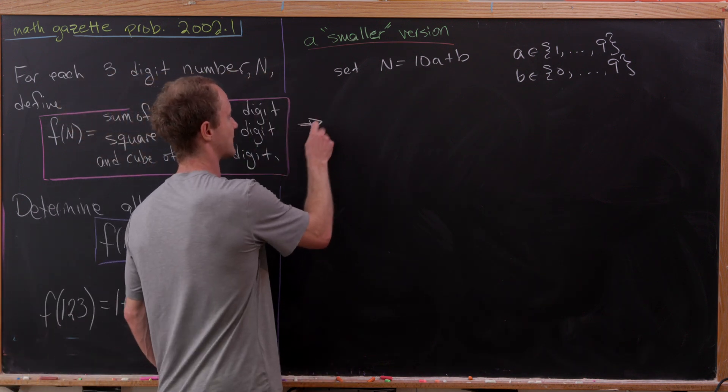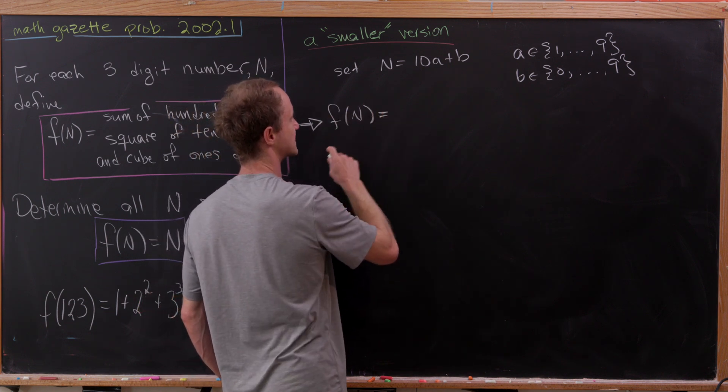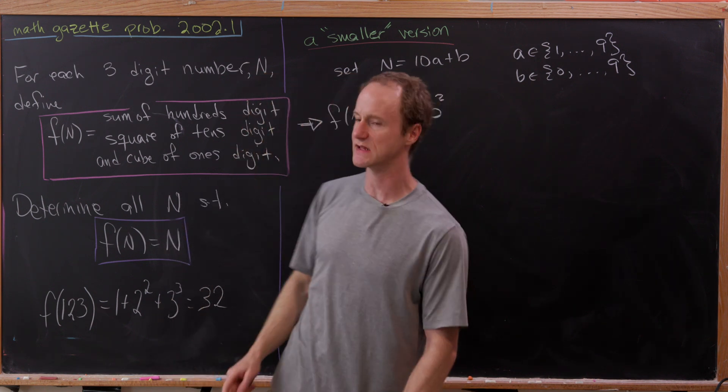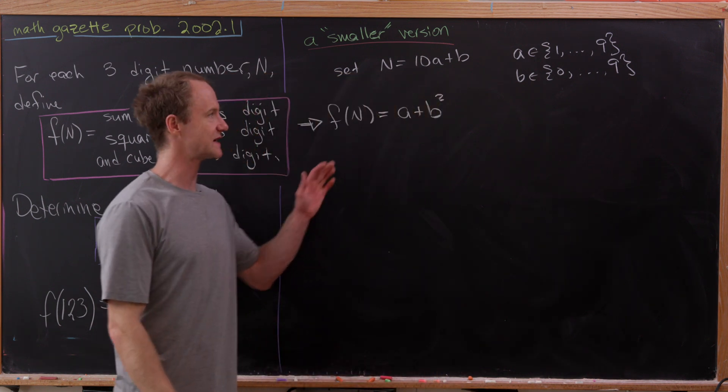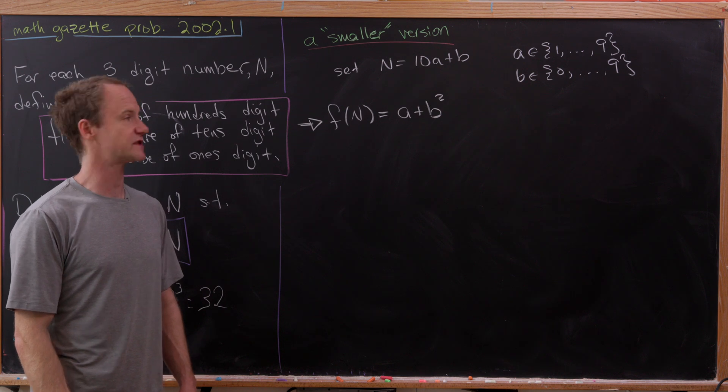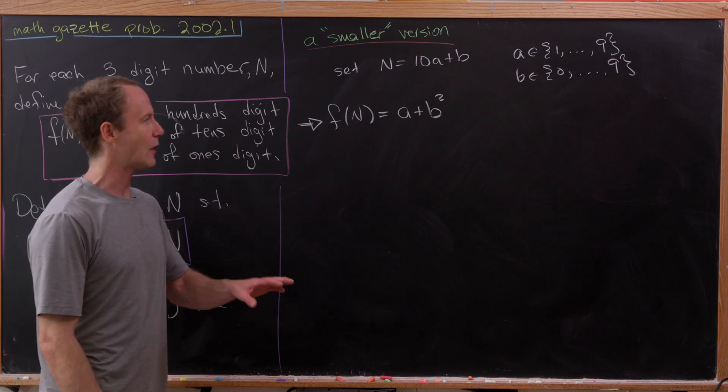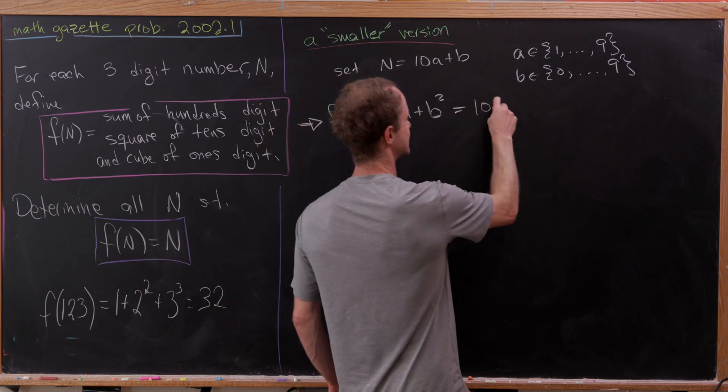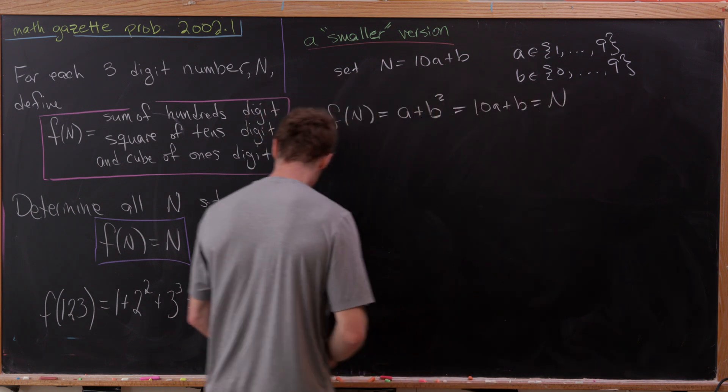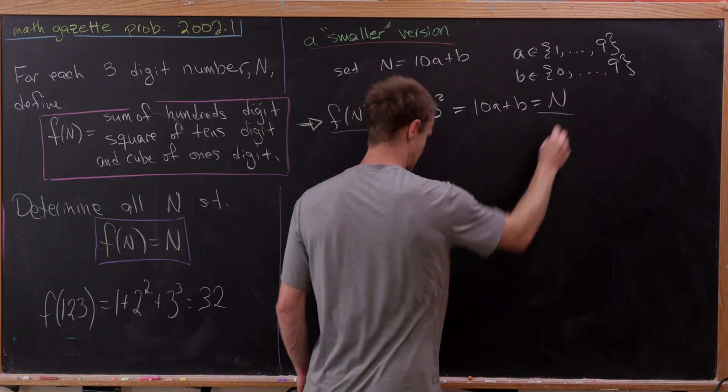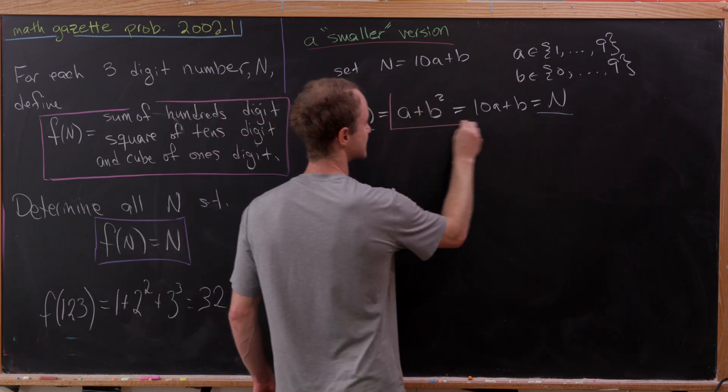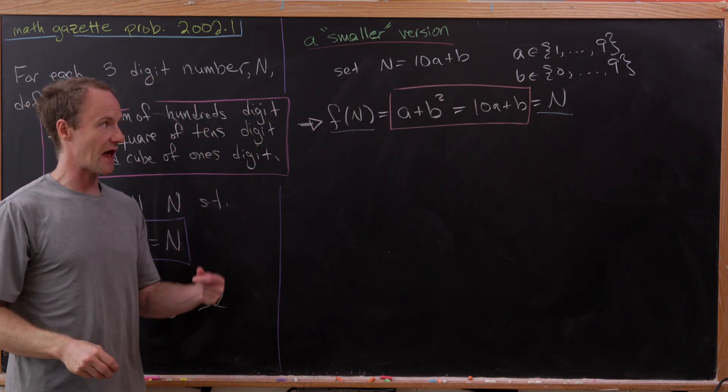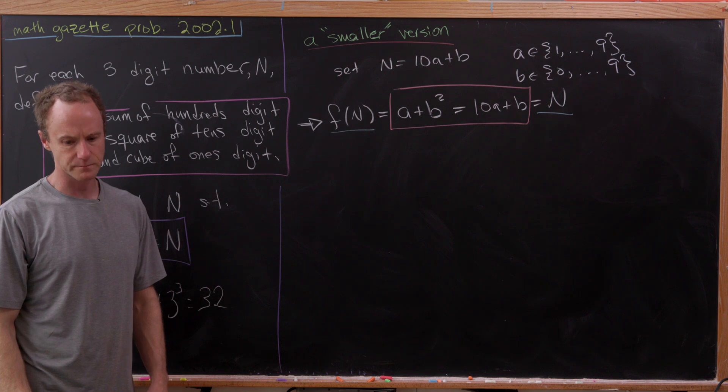Now observe that our function here, f of n, will take a and add it to b squared, just by the way that we're translating this to our smaller version. But now we want this to be equal to n, but notice that n is 10a plus b. So we've got f of n equal n, but that's going to force this equation right here, this equation involving a, b, and b squared.